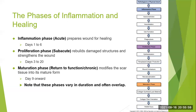In the next phase, the proliferation or subacute phase, the body begins to rebuild damaged structures and strengthen the wound — that's approximately days three to twenty. The first feature of the proliferation phase is epithelization, where adjacent cells migrate to the wound to help cover it. Intact skin cells on either side migrate to the center of the wound to start covering it up. Then fibroblasts come in and produce collagen to help strengthen the wound.